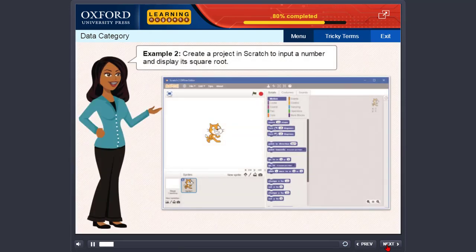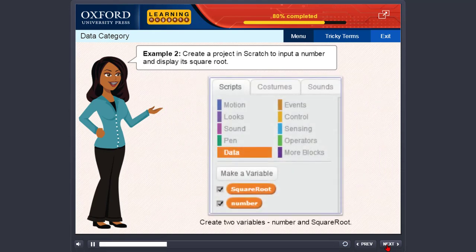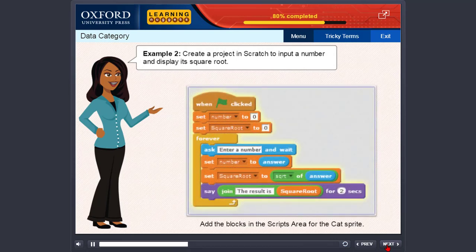Now, let us learn how to create a project in Scratch to input a number and display its square root. Start a new project. Create two variables, number and square root. Add the blocks in the scripts area for the cat's sprite. Click the green flag to start the project.